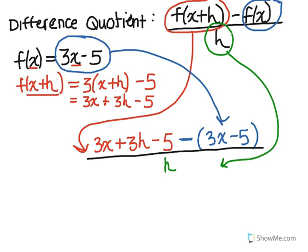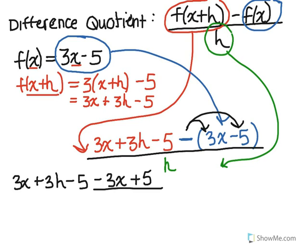So once we've plugged it all in, we want to do some simplifying on the top. So I may actually start by distributing that negative symbol. Subtract both of these so that we end up with 3x plus 3h minus 5 remains the same, and then we get minus 3x plus 5, all over h.